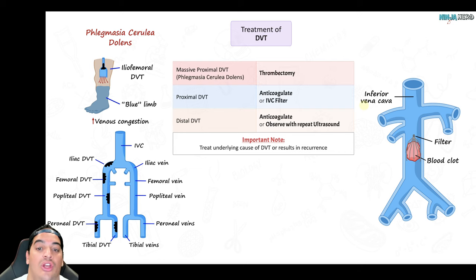If the PERC score is one or greater, or if the Wells probability is moderate — score of two to six — obtain a D-dimer. If D-dimer is less than 500, PE is unlikely and can be excluded. If D-dimer is greater than 500, proceed to CT pulmonary angiogram or V/Q scan. High probability patients skip the D-dimer and go directly to CTPA or V/Q scan. Low probability: use PERC; if PERC is zero, excluded; if PERC is one or more, get D-dimer; if D-dimer is elevated, get CTPA or V/Q scan.